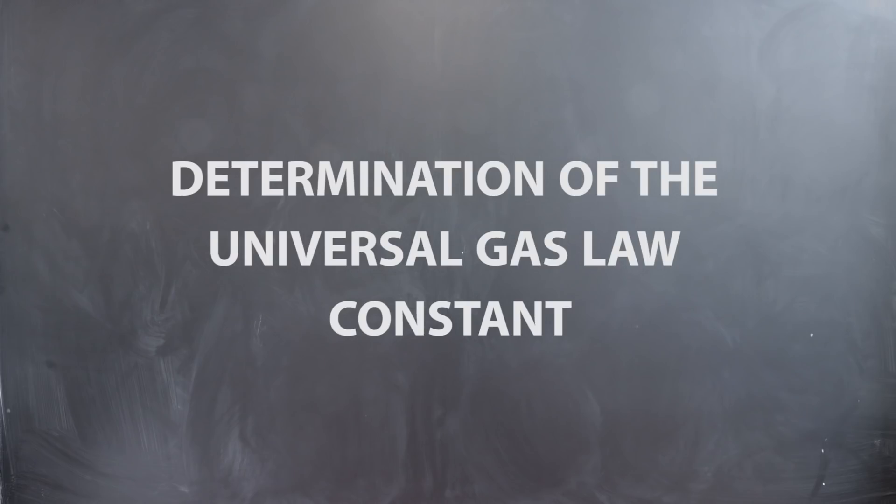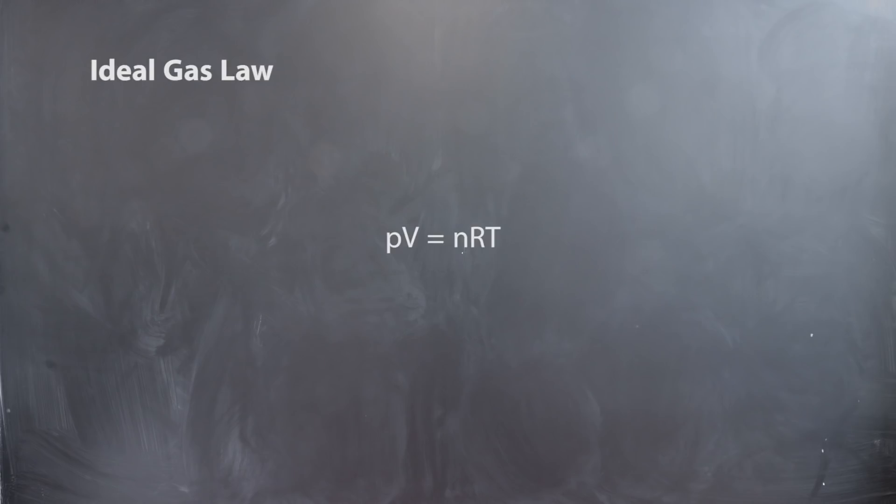Determination of the universal gas law constant. In this experiment you will be determining the ideal gas law constant R by applying the ideal gas law PV equals nRT to a reaction between HCl and magnesium.